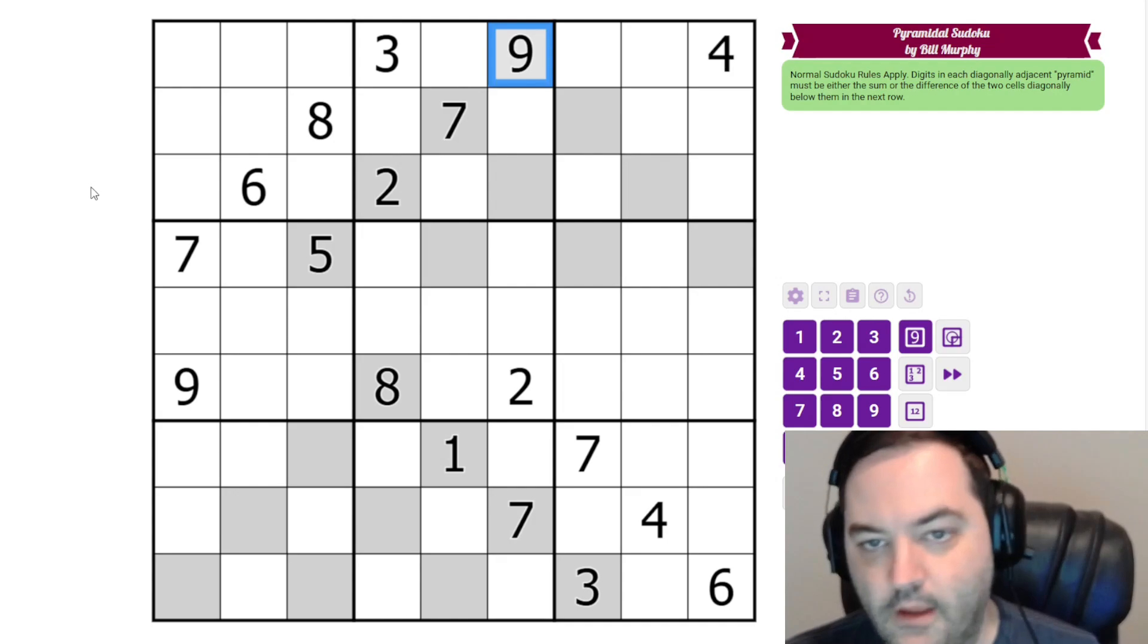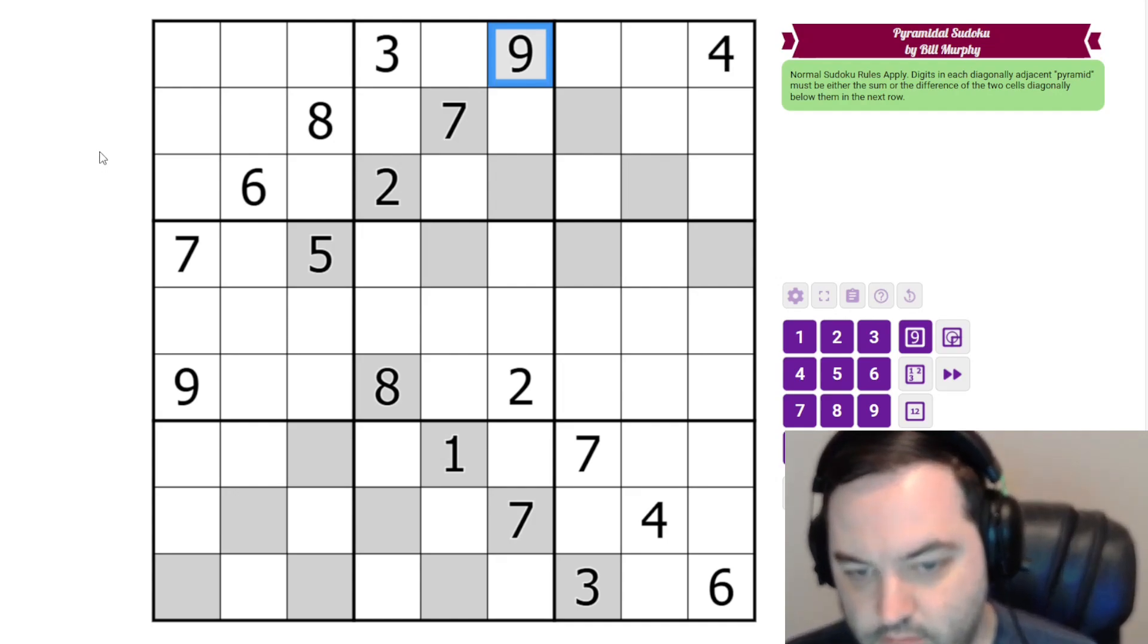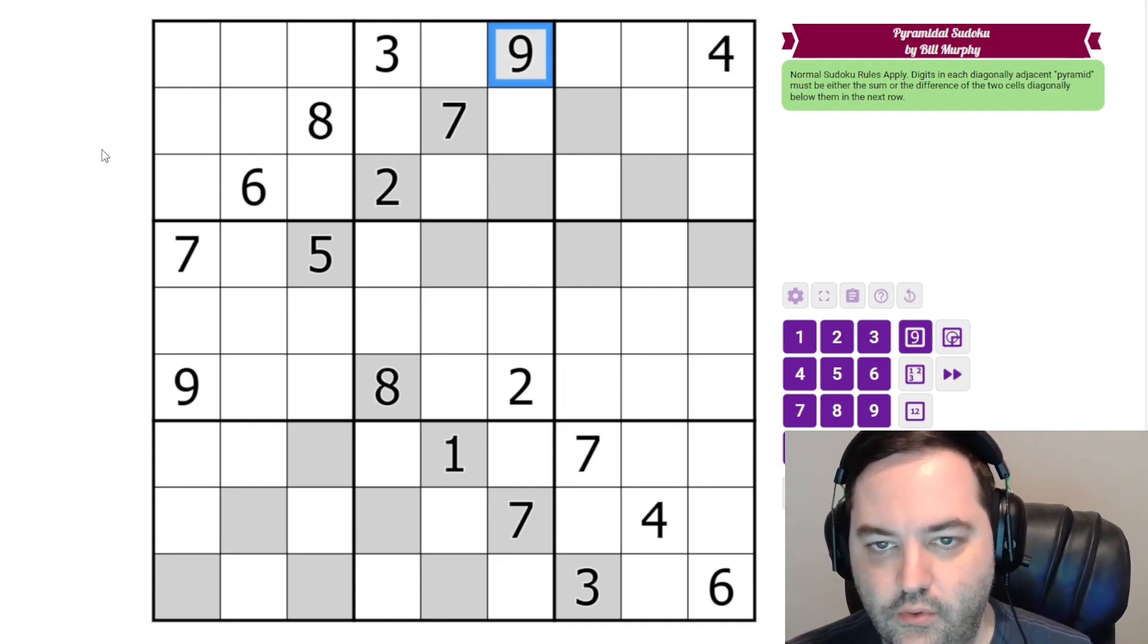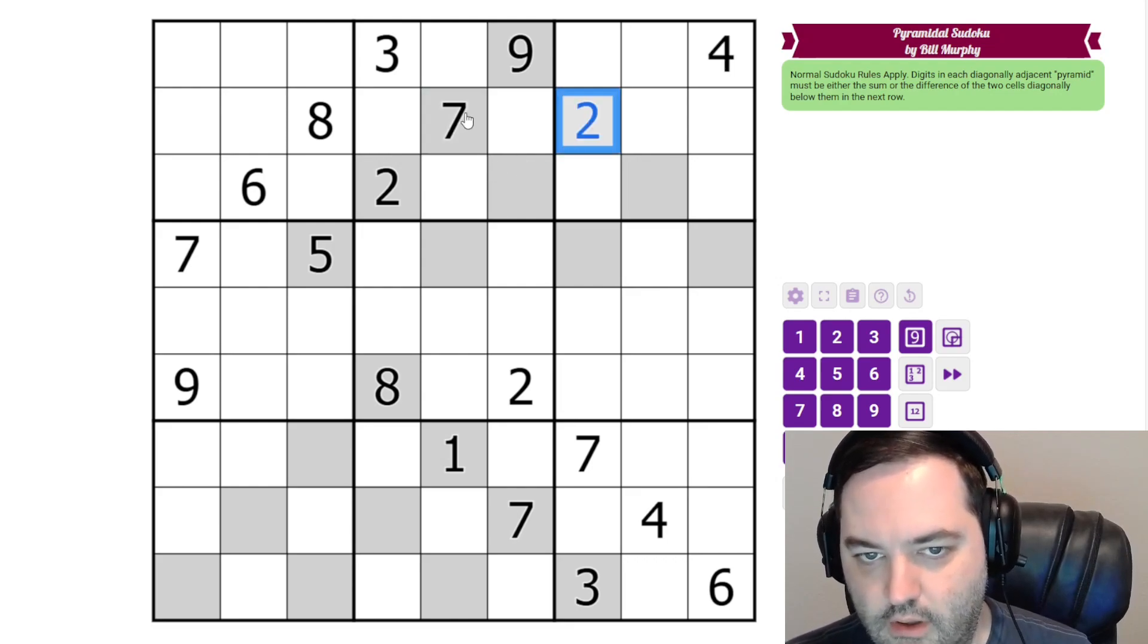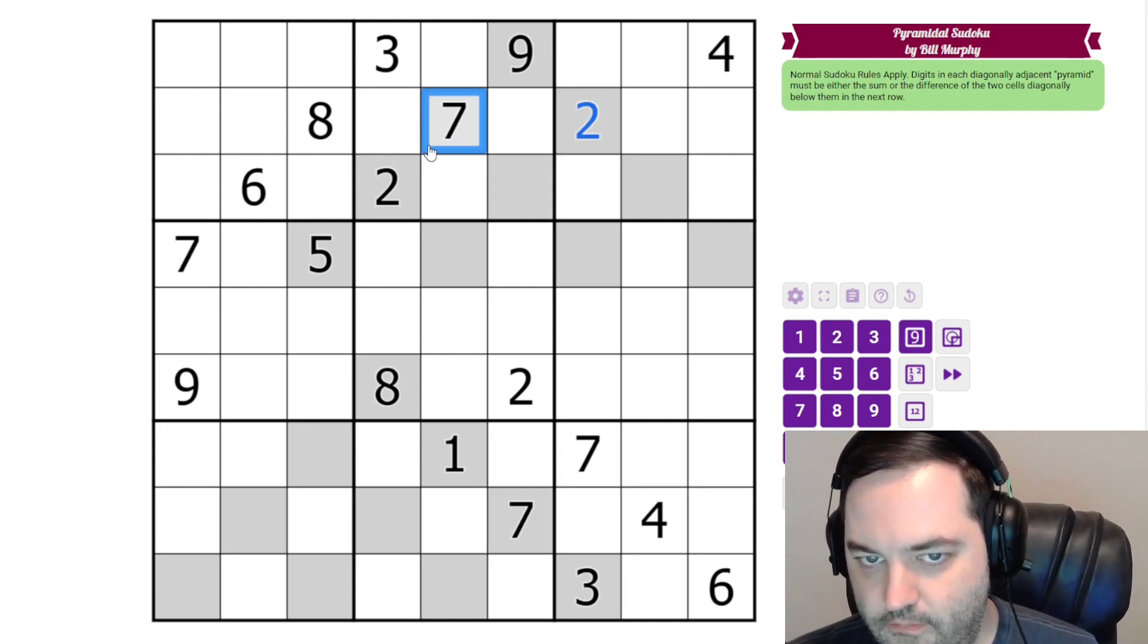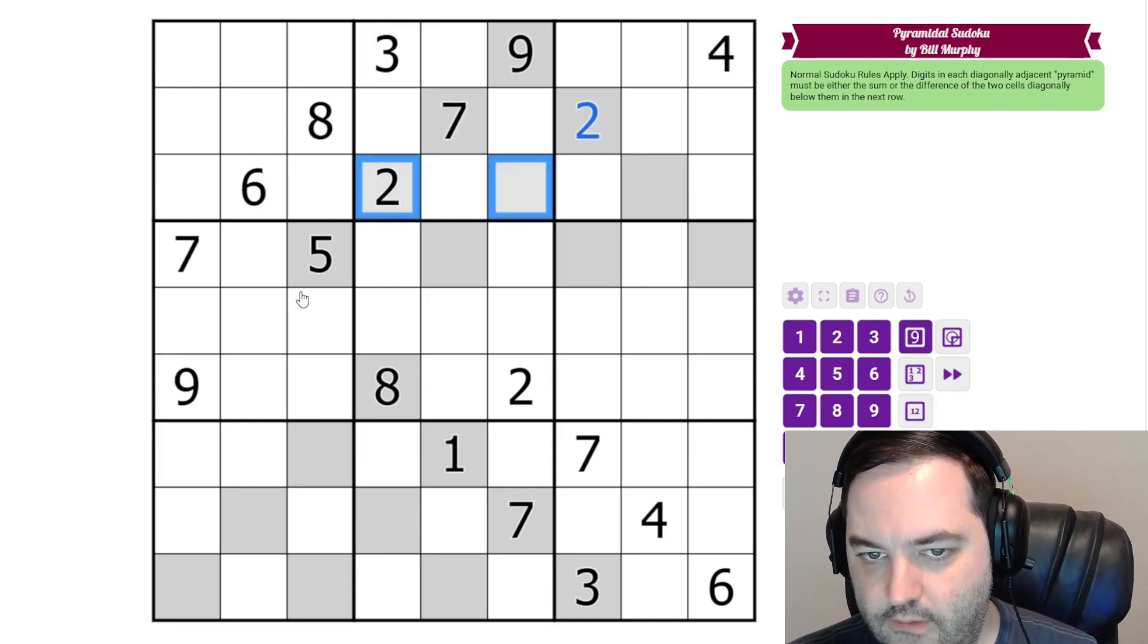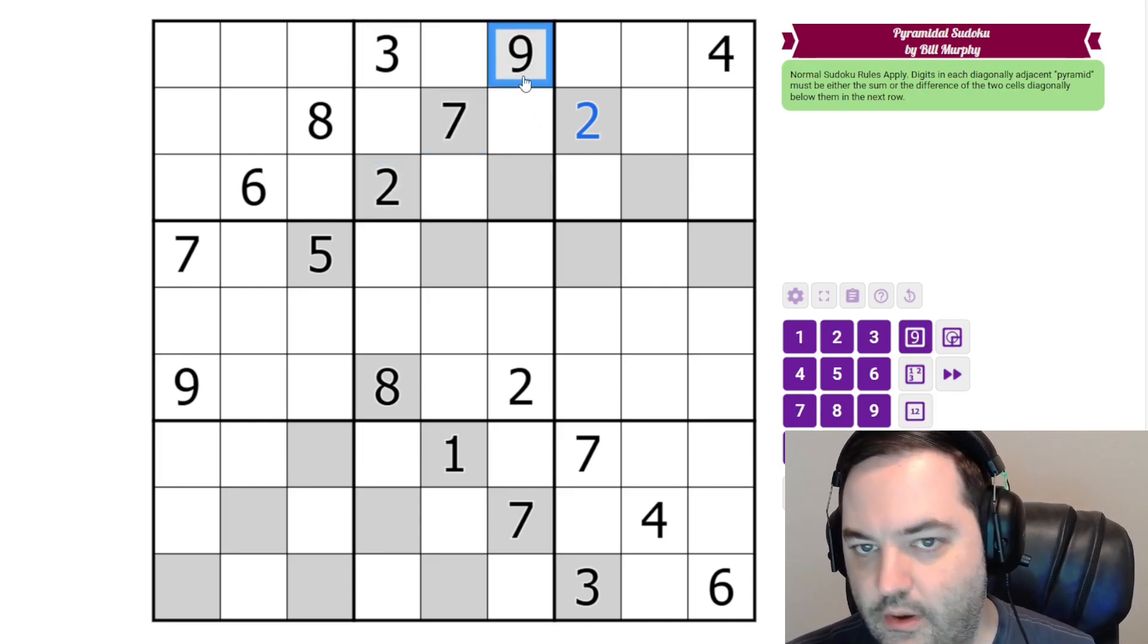So starting at the top, nine cannot be the difference. There is no way to have two digits in a Sudoku that have a difference of nine. So this must be a sum and the only way to make nine as a sum of something in seven is two. The seven however could be a difference, but in this case it would have to be nine minus two and we have a nine in the box. So this one is also a sum. To get seven we need a five.